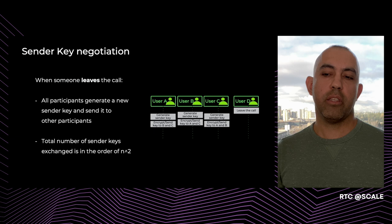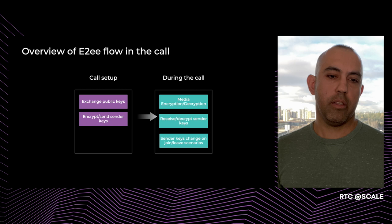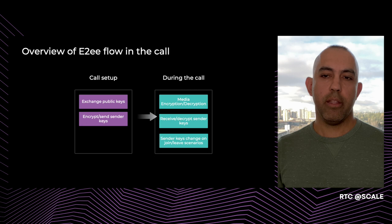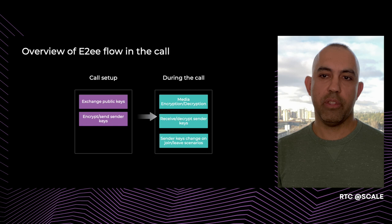Assuming n participants are left in the call, the total number of sender key exchanges will be on the order of n-squared. To summarize the architecture: during call setup, clients exchange their public keys, then encrypt and send their sender keys. Throughout the call, the media is encrypted and decrypted by S-Frame. Clients receive the sender keys, decrypt them, authenticate them, and sender keys can change during join and leave scenarios.